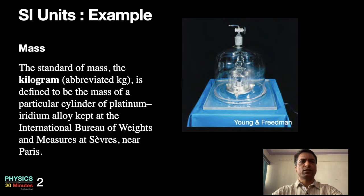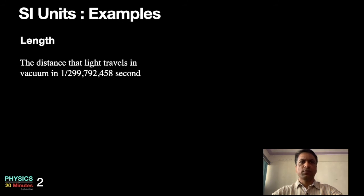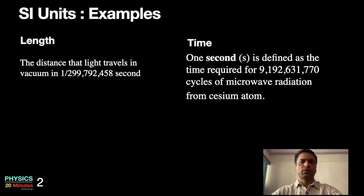I'll give you some examples of such references. The standard of mass - the kilogram is defined to be the mass of a particular cylinder of platinum iridium alloy kept at International Bureau of Weights and Measures at Sevres near Paris. You can see a small cylinder kept in these glass enclosures. Other examples: standard for length, which is 1 meter. 1 meter is the distance that light travels in vacuum in 1 upon 299792458 second. Standards of time: 1 second is defined as the time required for 9192631770 cycles of microwave radiation from caesium atom. So these are all the standards.